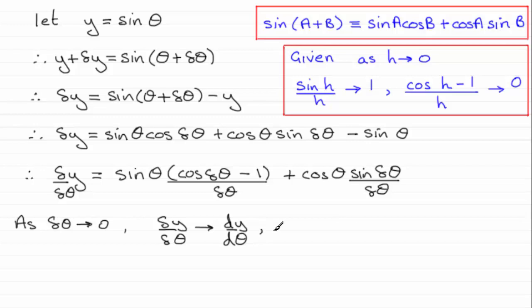And we can pick up on this result here which I'm taking as assumed knowledge. If we have h, a small angle, tending to 0, then sine h over h tends to 1 and the cosine of h minus 1 over h tends to 0. I haven't got h here though, I've got delta theta instead.